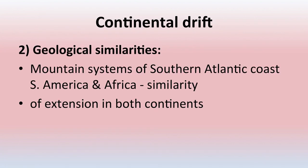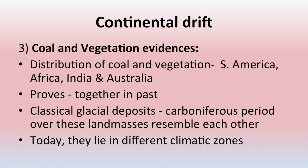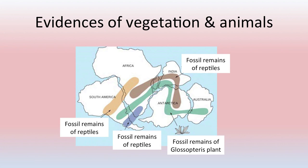The second evidence is geological similarities — the mountain systems of South America and Africa along the southern Atlantic Ocean can be found similar, with extensions found in both continents. The third evidence is coal and vegetation: the distribution of coal and vegetation of South America, Africa, India, and Australia can be found similar, proving they were together in the past. Classical glacial deposits from the Carboniferous period over these landmasses resemble each other, though today they lie in different climatic zones. Similar vegetative and animal fossil remains have been found across these continents.